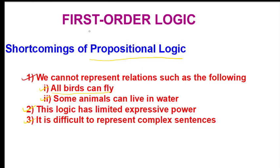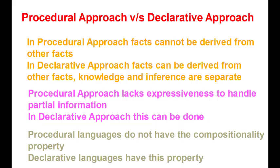Now there are two programming approaches: the procedural approach and the declarative approach. In the procedural approach, facts cannot be derived from other facts. But in the declarative approach, facts can be derived from other facts. Also, in the declarative approach, knowledge and inference are separate entities, whereas in the procedural approach they are one and the same thing.